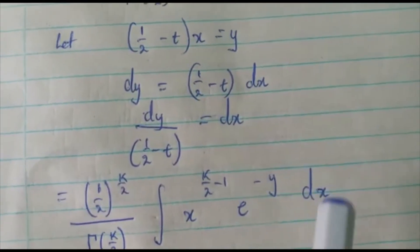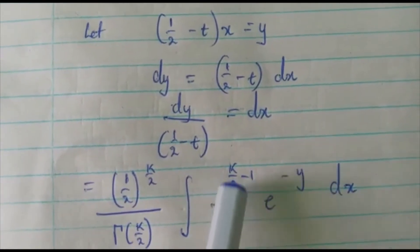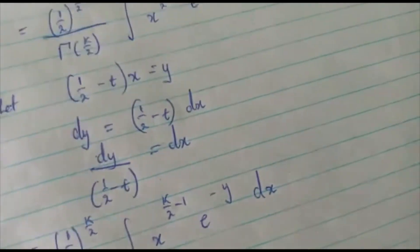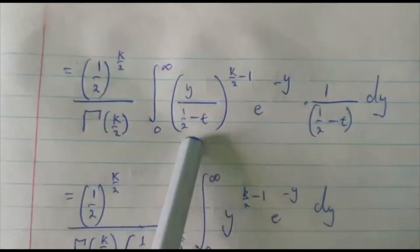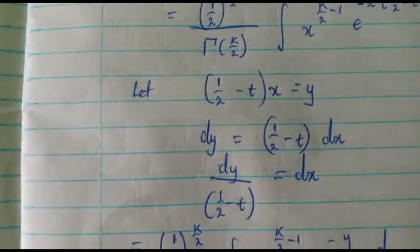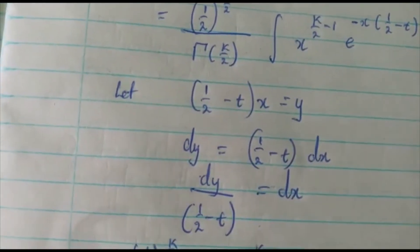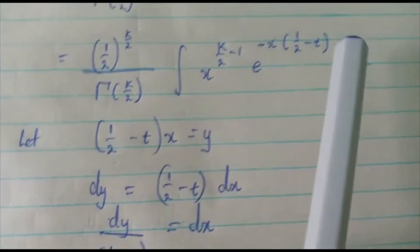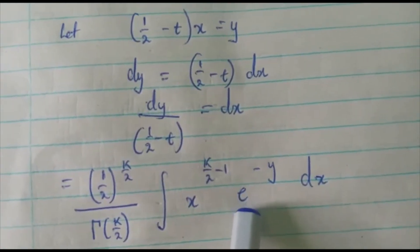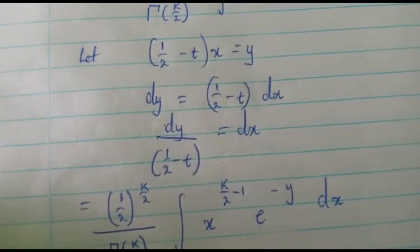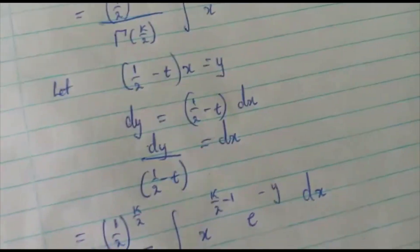It is now e to the power negative y, and dx remains to be substituted. We proceed with our workings, substituting x — our formula is (half minus t) times x equals y, so we make x the subject, giving x equals y over (half minus t). We replace the exponential power with y.